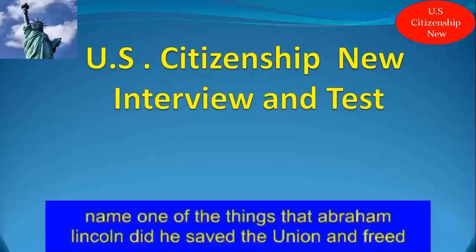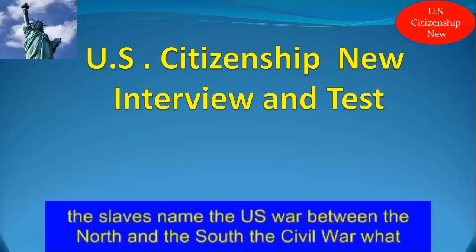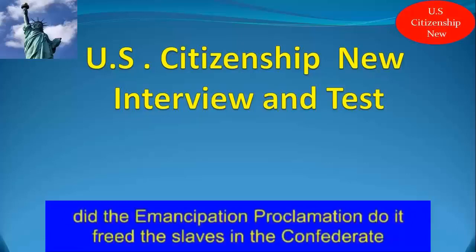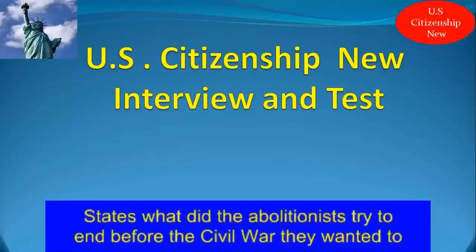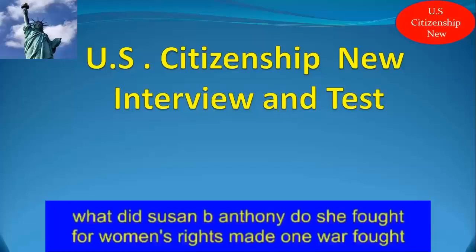Name one of the things that Abraham Lincoln did. He saved the Union and freed the slaves. Name the U.S. war between the North and the South. The Civil War. What did the Emancipation Proclamation do? It freed the slaves in the Confederate States. What did the abolitionists try to end before the Civil War? They wanted to end slavery. What did Susan B. Anthony do? She fought for women's rights.